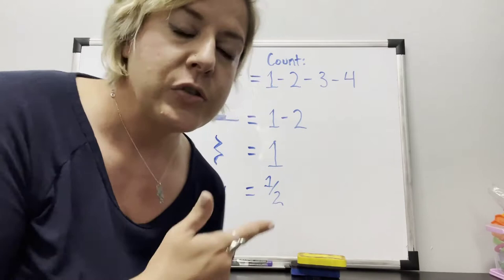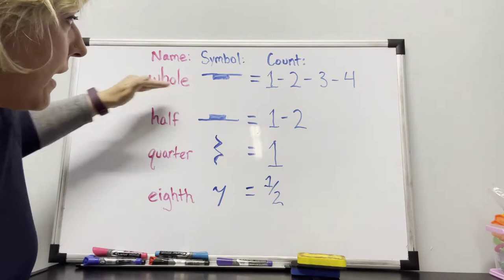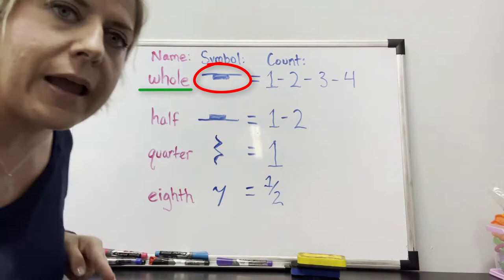So let's look at this little chart that I drew. At the top, you'll see that it has the word whole and then this symbol. So this is the symbol for a whole rest, which gets four counts, just like a whole note gets four counts.